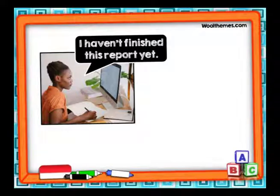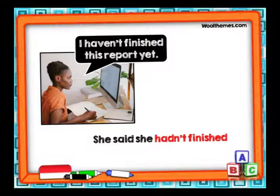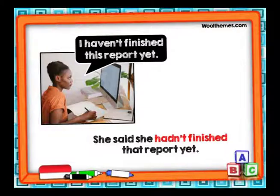Vamos a transformar esto a reported speech usando pasado perfecto. She said she hadn't finished that report yet. Ella dijo que no había terminado su reporte todavía. Comparemos: la oración original es 'I haven't finished this report yet' y cuando le contamos a alguien más lo hacemos en pasado: She said she hadn't finished that report yet.